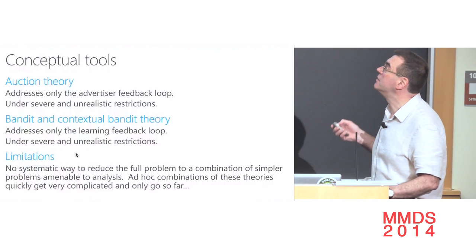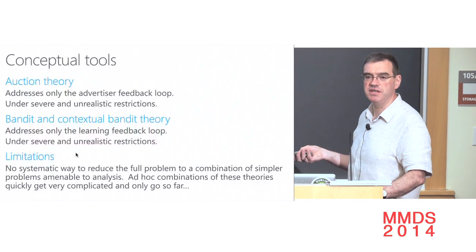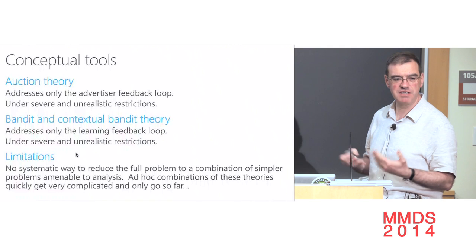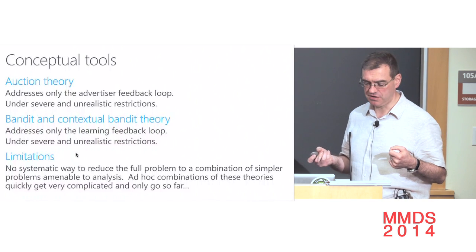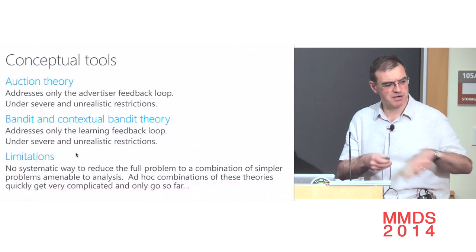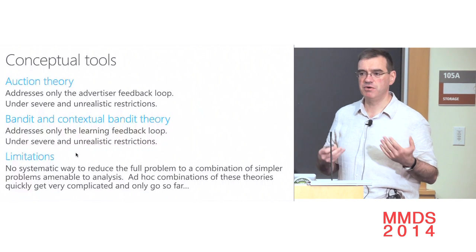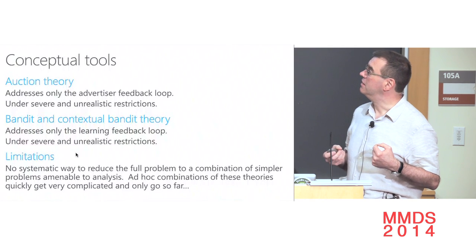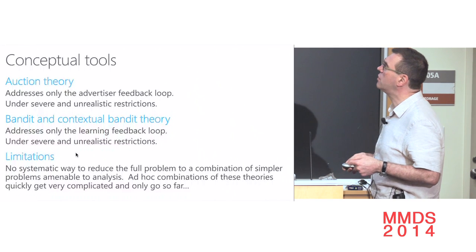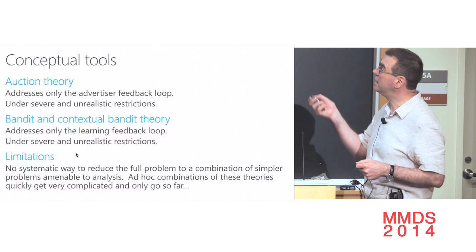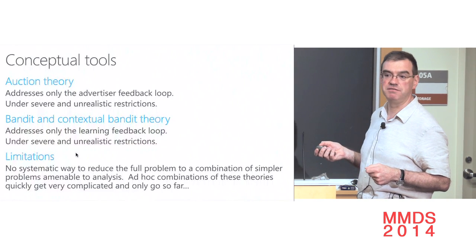The conceptual tools for solving this problem include auction theory, which addresses the advertiser feedback loop and bidding behavior, and contextual bandit theory in machine learning, which addresses the learning feedback loop. There are nice results for explore-exploit, but there is no systematic way to reduce the full problem with all these loops to a combination of simpler problems analyzable with these theories. People tried many ad hoc combinations — they only go so far and are very complicated.